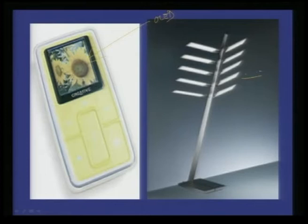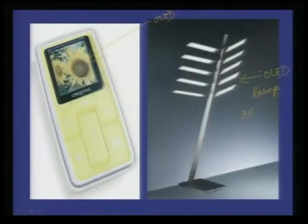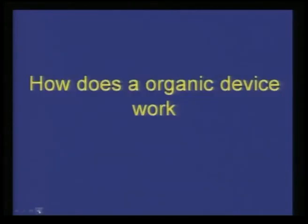This is a table lamp made of OLED lighting. The important advantage is it gives you cool light — more brightness but still cooler, it does not irritate your eyes. The efficiency of organic lamps is very high; you can even operate them with a 3-volt battery. You do not need AC supply, and many lighting applications are also being served using organic LEDs.